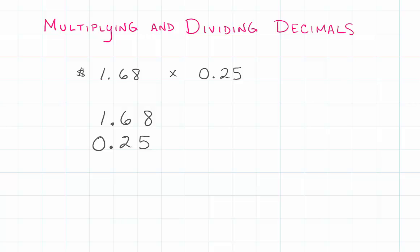Now I'm going to look at how many place values we're affecting. We have two here and two here, so that means we've got a total of four place values that we have to deal with after we get our answer.